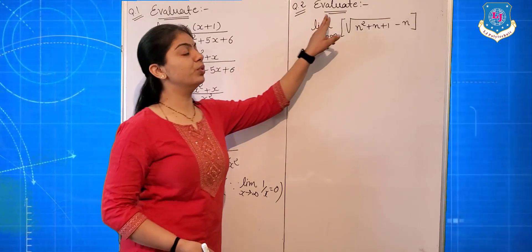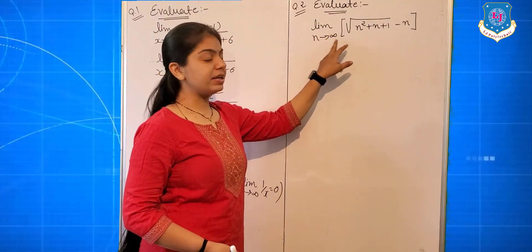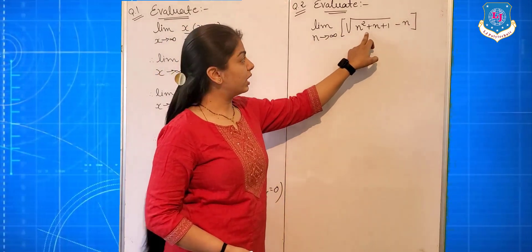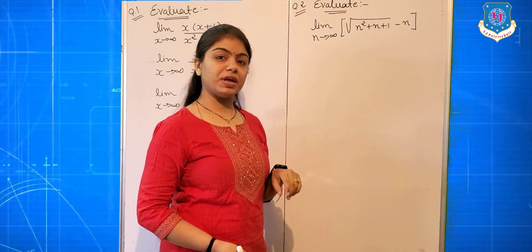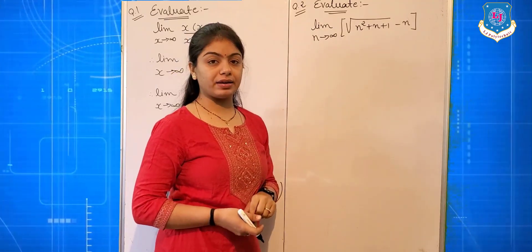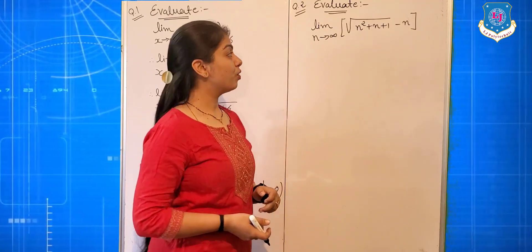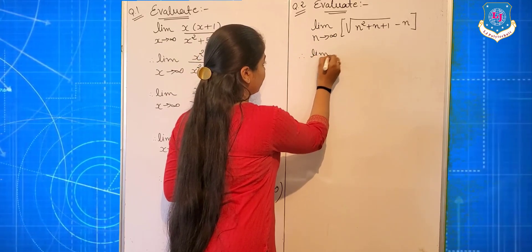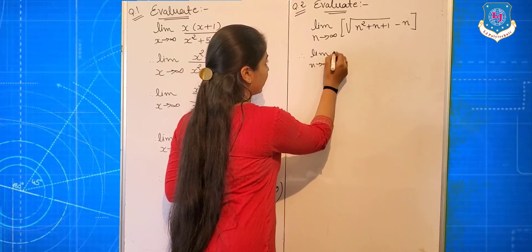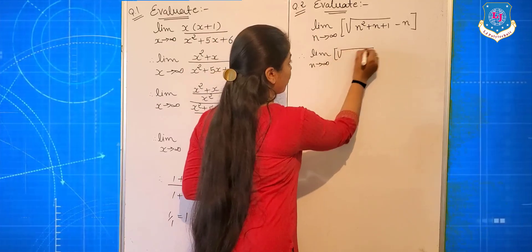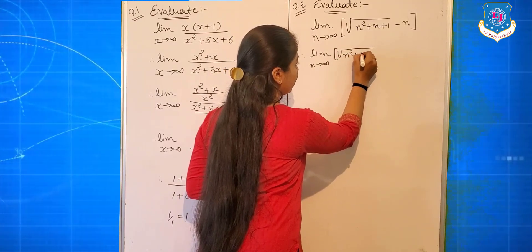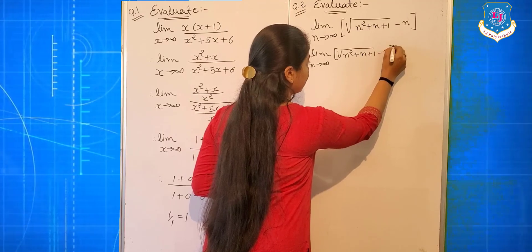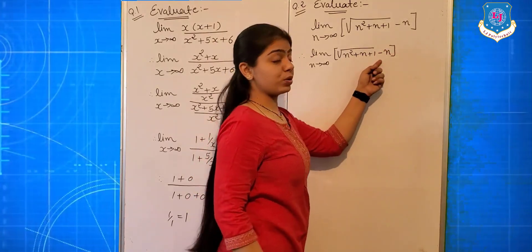Question number 2: Evaluate limit n tends to infinite of (√(n² + n + 1) − n). The first step is to write down: limit n tends to infinite of √(n² + n + 1) − n, and then apply the rationalizing procedure.